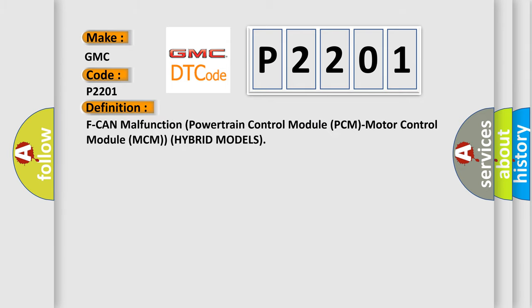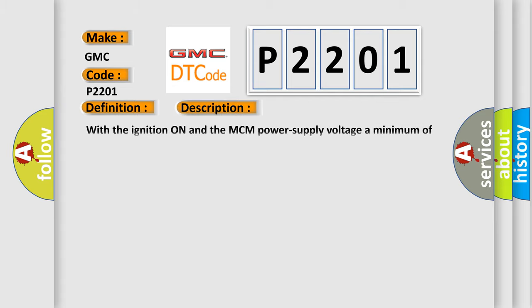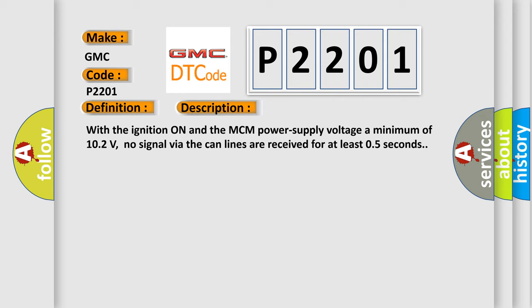The basic definition is: malfunction in the powertrain control module (PCM) or motor control module (MCM) for hybrid models. With the ignition on and the MCM power supply voltage at a minimum of 10.2 volts, no signal via the CAN lines is received for at least 0.5 seconds.